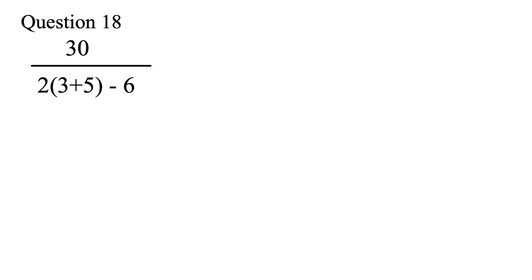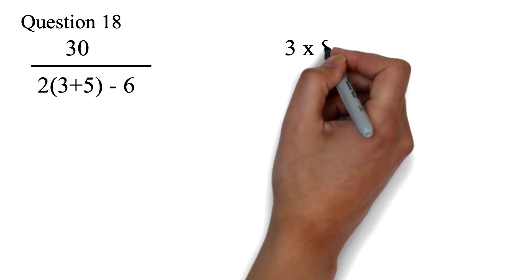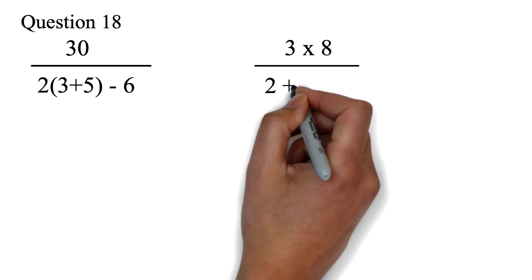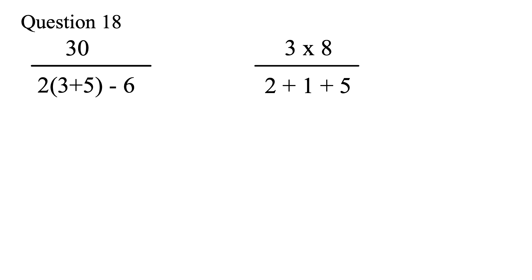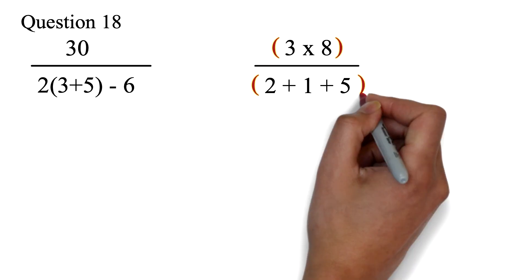Let me give you a clue on how to solve it. When you have an operation or multiple operations in the numerator or denominator, you'll have to work on it like it actually has parentheses, although it is not written. So, if you have 3 times 8 over 2 plus 1 plus 5, this will be worked out as if it has parentheses.